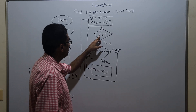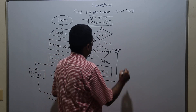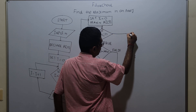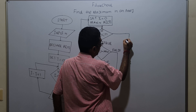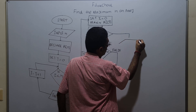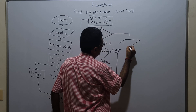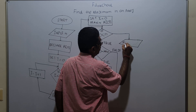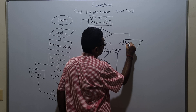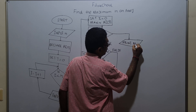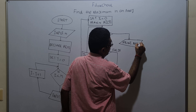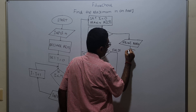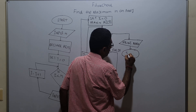If i less than n is false, the loop is over. I am printing the maximum element — print max. The maximum value of the array will get printed, and this is the logical end of the flowchart — that is stop.